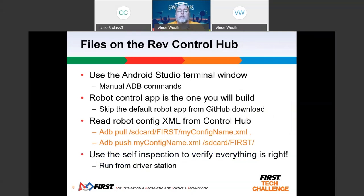For files on the control hub, you can use ADB. You can open Android Studio and do ADB commands. Do not install the default robot app that comes with your data hub download — there will be one there, but it's not designed for your hardware. When you build your code, it will automatically load onto the robot, so don't worry about how to get that there. If you want to look at the XML for control, you can use the command `adb pull` — the path starts with `/sdcard/` which it will recognize as being in the phone or control hub — and it'll go to the FIRST directory on the Android device and pull your config XML.